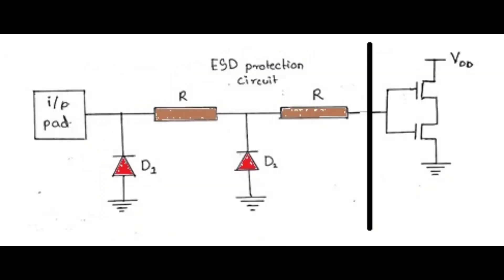Secondly, an input protection circuit is added between the input pad and the MOSFET gate. During ESD, when a large positive voltage is applied to the input pad, diodes D1 and D2 undergo breakdown and prevent the CMOS circuit from damage.